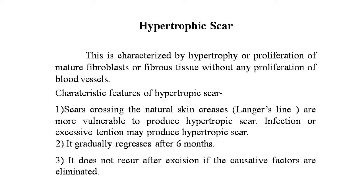The next topic is hypertrophic scar. In this condition, both the intensity and duration of the active phase of scar formation are increased. It is characterized by hypertrophy or proliferation of mature fibroblasts or fibrous tissue without any proliferation of blood vessels. A scar may undergo hypertrophy, which remains localized and after a time slowly regresses. This type of scar is more common in young individuals, and scars crossing the natural skin creases — Langer's lines — are more vulnerable to becoming hypertrophic.